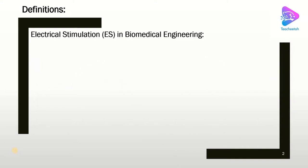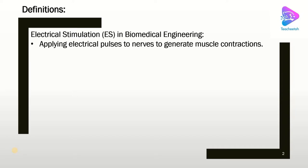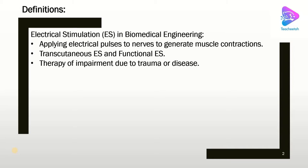What is electrical stimulation in biomedical engineering? Electrical stimulation means applying electrical pulses to nerves to generate muscle contractions. As we apply these stimulations through the skin, we call it transcutaneous electrical stimulation. If we control the electric pulse function into a well-ordered shape, we can get desired motion — that's why we also call it functional electrical stimulation. The application is for therapy of impairment due to trauma or disease.